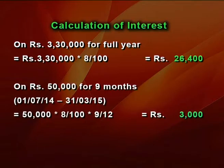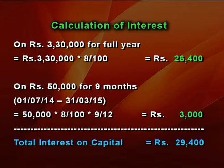Rs 50,000 was introduced on 1st July 2014. From 1st July 2014 to 31st March 2015, this capital remains in business for 9 months. So it is entitled for interest of 9 months: 8% on Rs 50,000 for 9 months amounts to Rs 3,000. Therefore, total interest on capital is Rs 29,400, that is Rs 26,400 plus Rs 3,000.